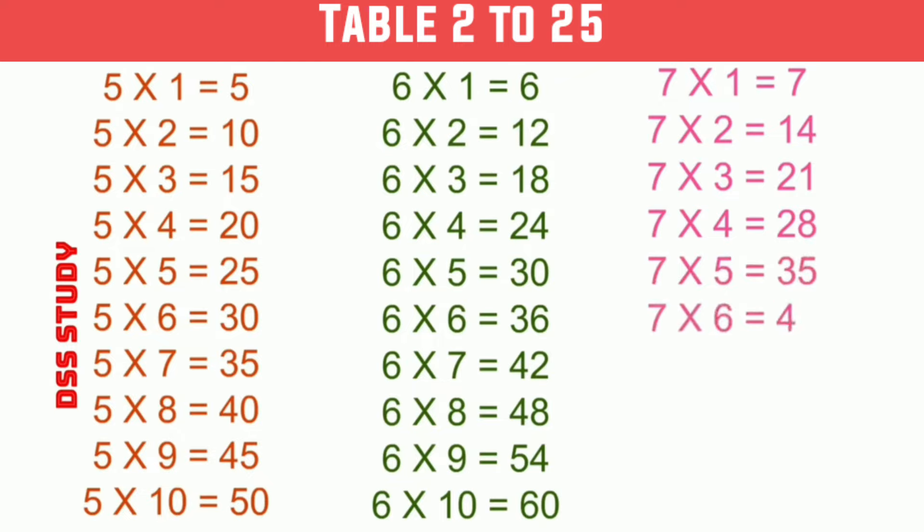7×6 is 42, 7×7 is 49, 7×8 is 56, 7×9 is 63, 7×10 is 70.